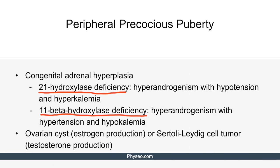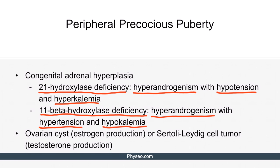21-hydroxylase deficiency is accompanied by hyperandrogenism with hypotension and hyperkalemia, due to low mineralocorticoids. On the other hand, 11-beta-hydroxylase deficiency is associated with hyperandrogenism with hypertension and hypokalemia, due to excessive mineralocorticoids. An ovarian cyst or a Sertoli-Leydig cell tumor can also cause this by producing excessive estrogen or testosterone, respectively.